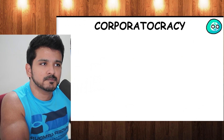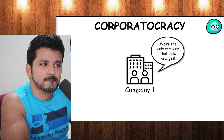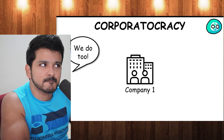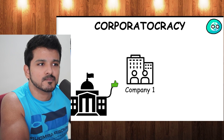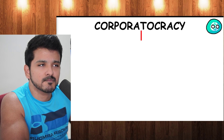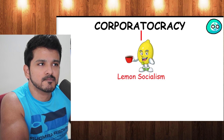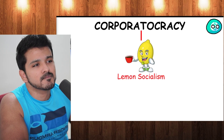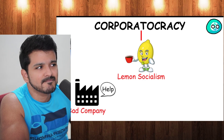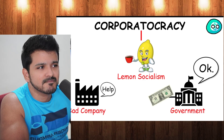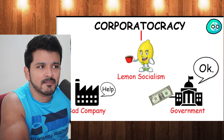Corporatocracy is an economic system in which the state intervenes within the economy for the benefit of a select number of corporations, especially in the context of squashing competition. A variant of corporatocracy is lemon socialism — a pejorative term for an economic system based on a government that offers subsidies to weak, bad, or bankrupt companies so that they remain in the market.